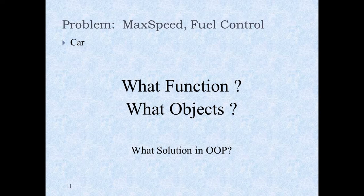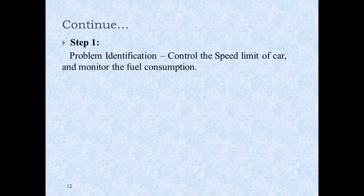Here is another example. The problem is that I have to control the fuel consumption and the maximum speed of a car. I have to control two things: one is speed and one is fuel consumption. The problem is to monitor two things in the car — one is speed and one is fuel consumption. Control the speed limit of the car and monitor the fuel consumption.